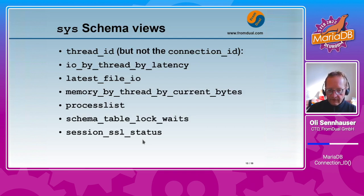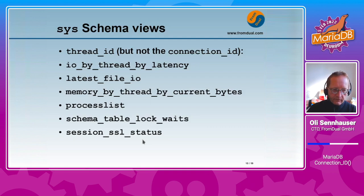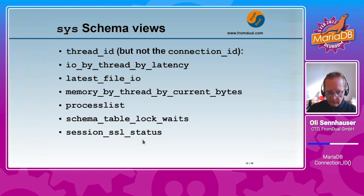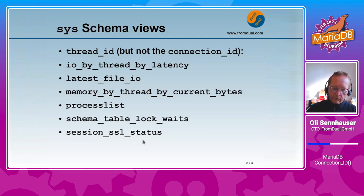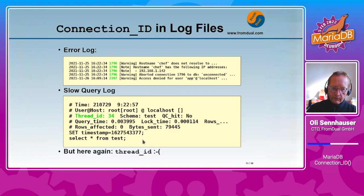For example, we have io_by_thread_by_latency so we can see IO latency by connection, file IO process list which we already know, log waits, etc. So here we can find out which connection caused some activity visible in the sys schema views.